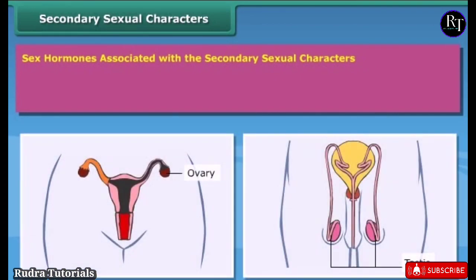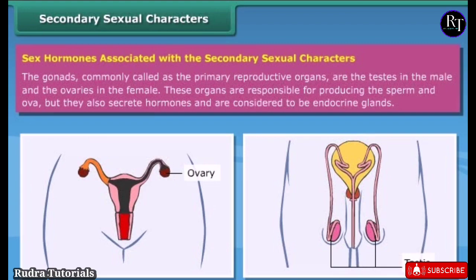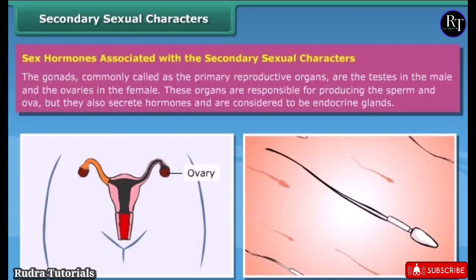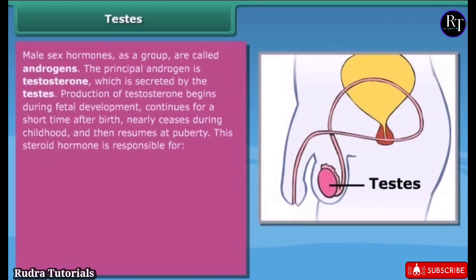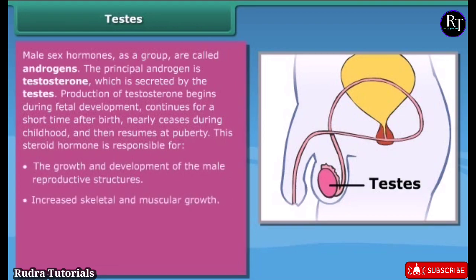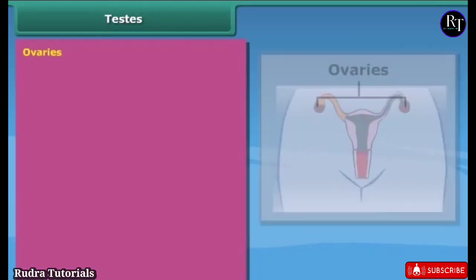The gonads — commonly called the primary reproductive organs — are the testes in the male and the ovaries in the female. These organs produce sperm and ova, but also secrete hormones and are considered endocrine glands. Male sex hormones as a group are called androgens; the principal androgen is testosterone, secreted by the testes. Testosterone production begins during fetal development, nearly ceases during childhood, then resumes at puberty. It is responsible for growth of male reproductive structures, skeletal and muscular growth, enlargement of the larynx, voice changes, and growth and distribution of body hair.